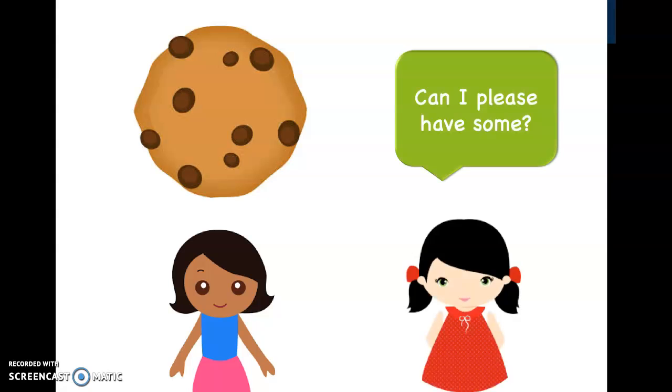Okay, so here is an example. Let's call this little girl named Katie. She has a whole cookie. Along comes her friend named Betsy. She says, can I please have some? I want you guys to think in your heads — what is the best way to go about it? How can Katie share her cookie with her friend Betsy?